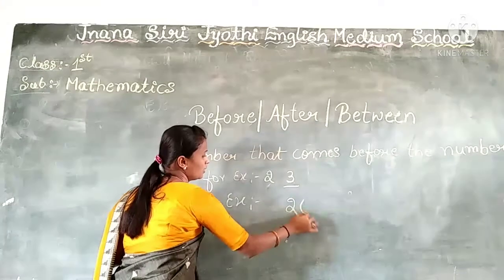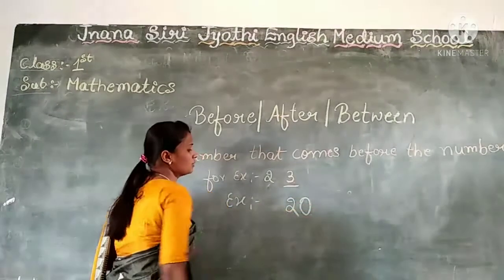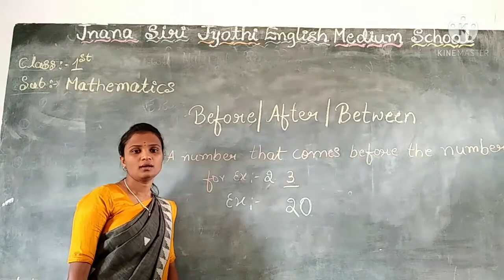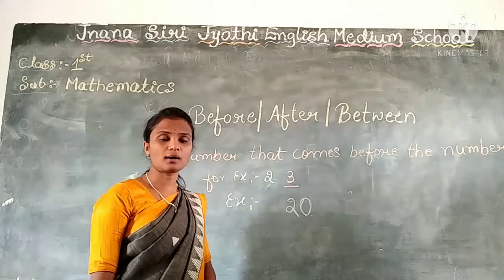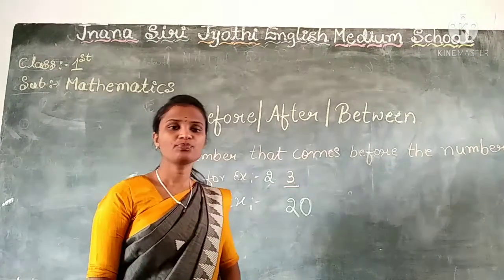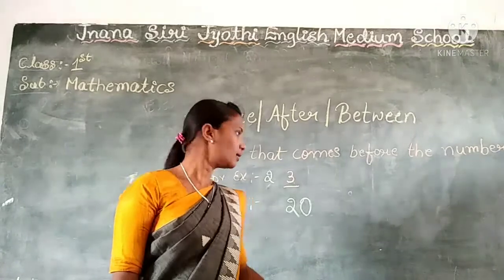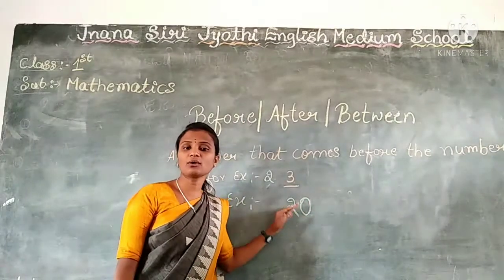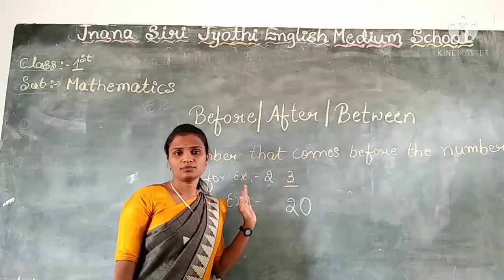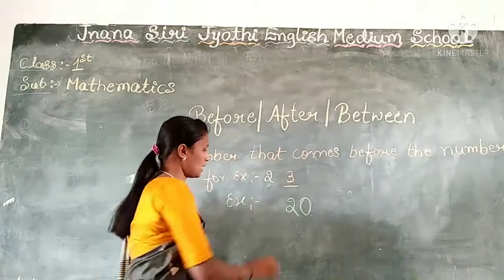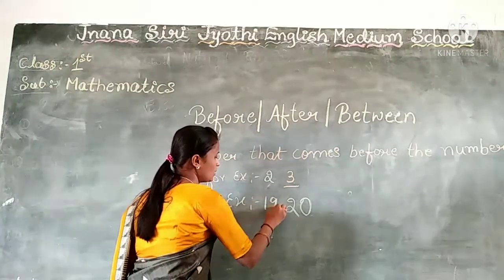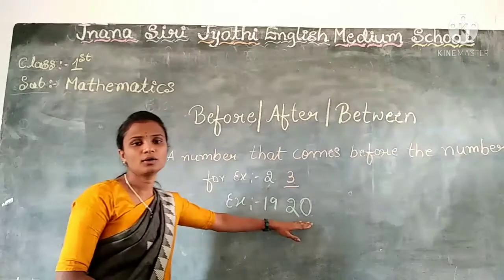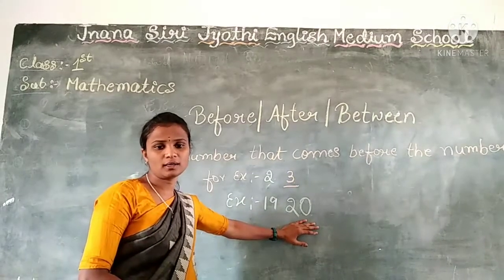Another example: which number comes before the number 20? Yes, 19. So 19 is the before number for 20. Right?